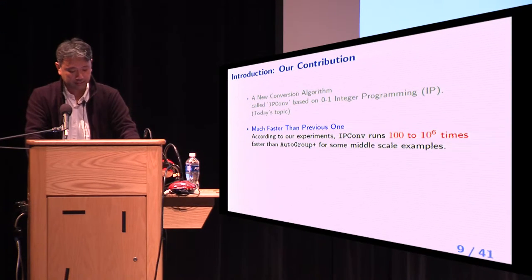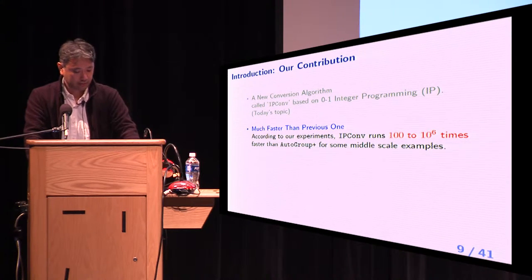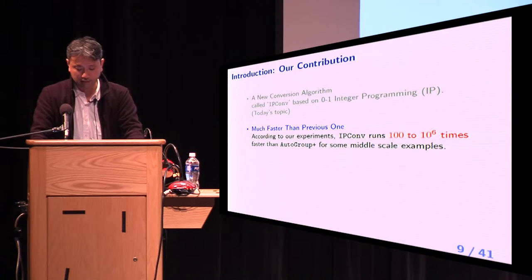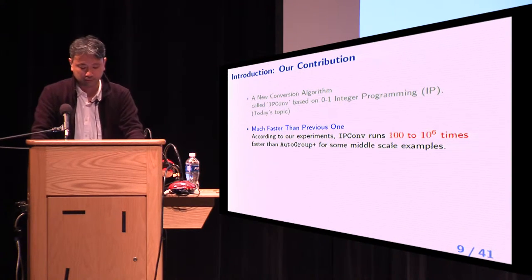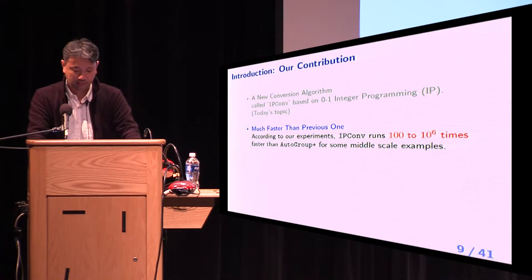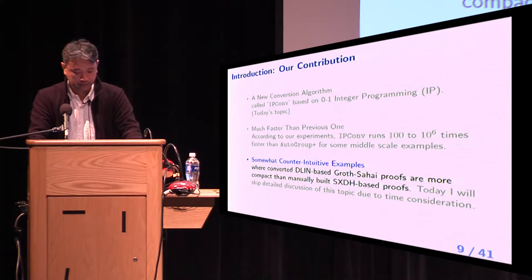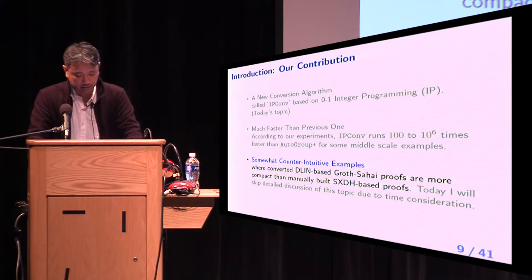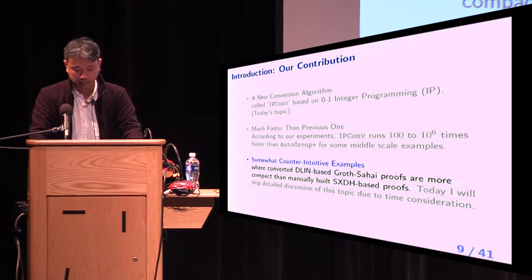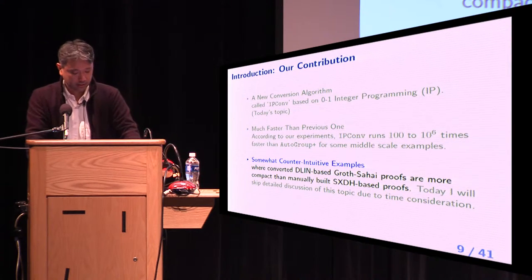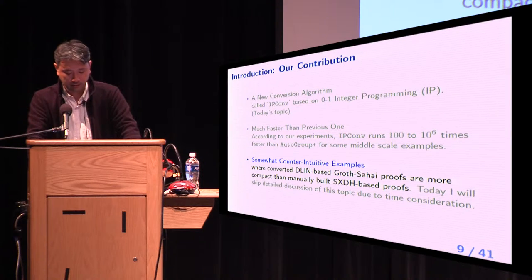This is today's topic. It runs much faster than the previous one. According to our experiments, IP-conv runs 100 to 1 million times faster than AutoGroup Plus for some middle-scale examples. By using IP-conv, we found some counter-intuitive examples where converted D-linear-based Groth-Sahai proofs are more compact than manually built SXDH-based proofs. But today, I will skip this topic due to time consideration.